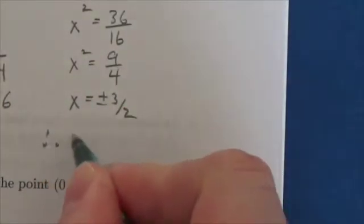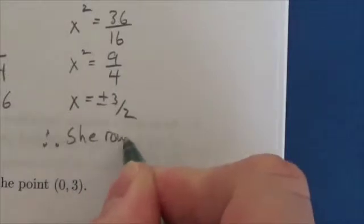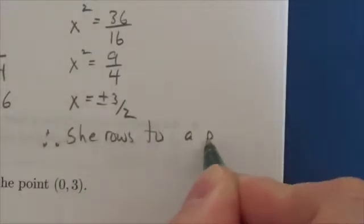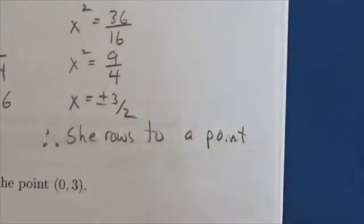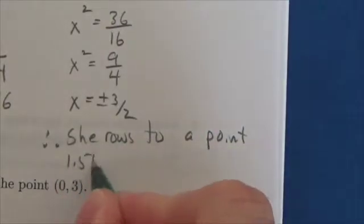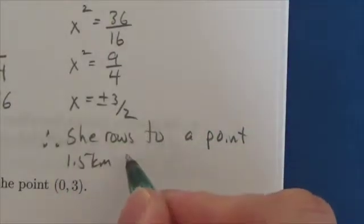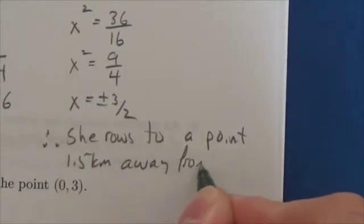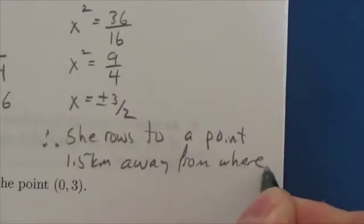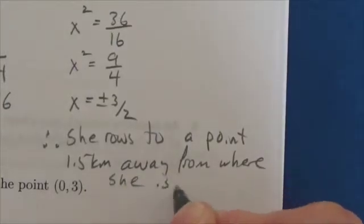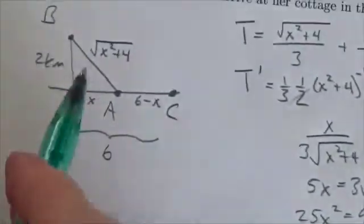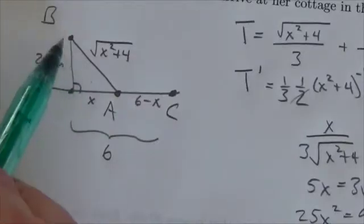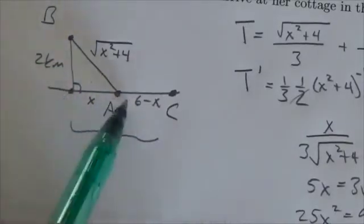Therefore, she rows to a point 1.5 kilometers away from where she is. So basically we're saying here, she's out on shore here, she's going to row to a point that's 1.5 kilometers along the shoreline and that's it.